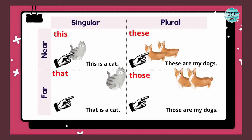For example: this is a cat — you can see that the cat is close to the speaker. That is a cat — we use that because the cat is far away from the speaker. These are my dogs. Those are my dogs.